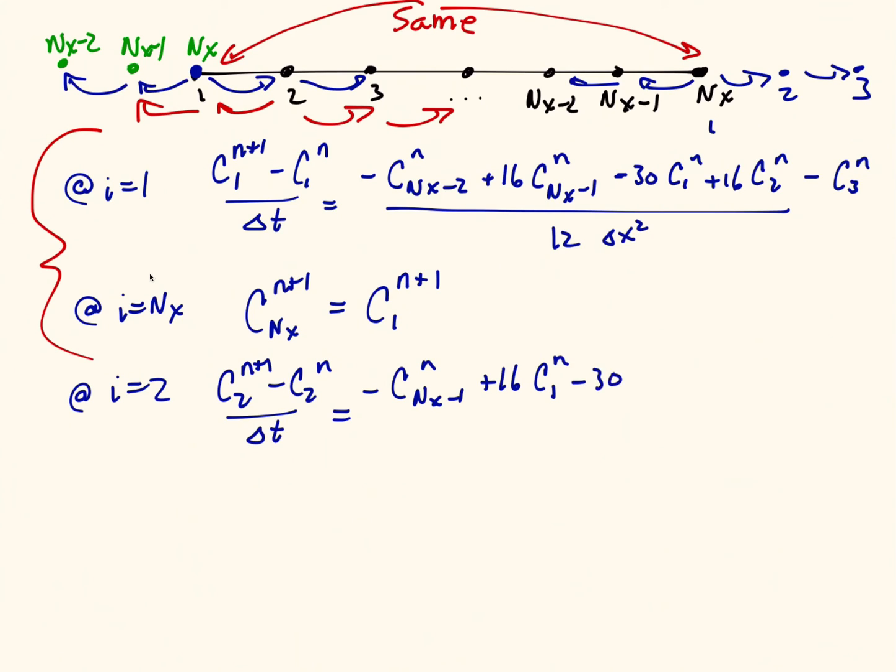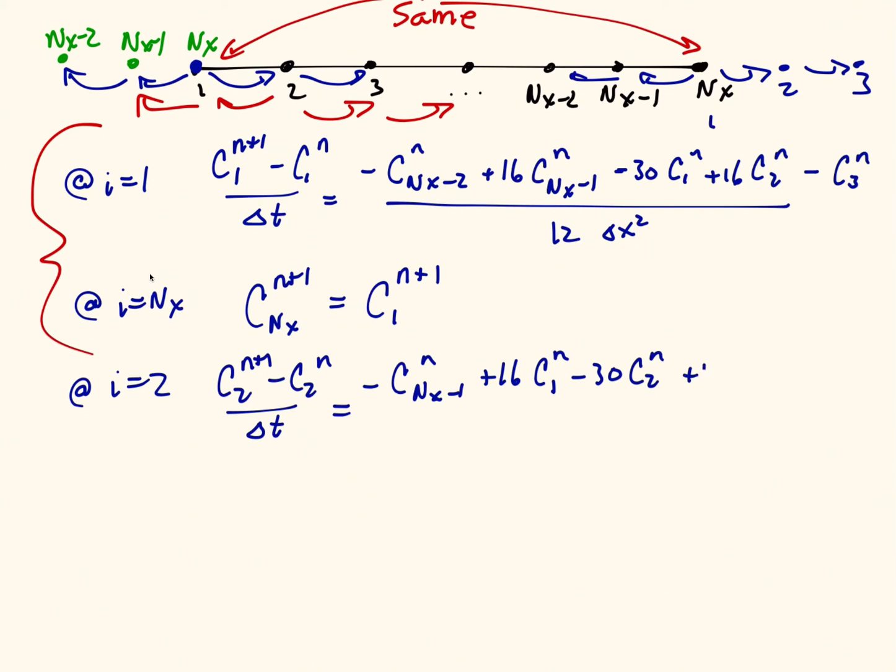Minus 30 times myself, which is c2^n, plus 16 times the point to my right, which is c3^n, minus the point 2 to my right, which is c4^n.